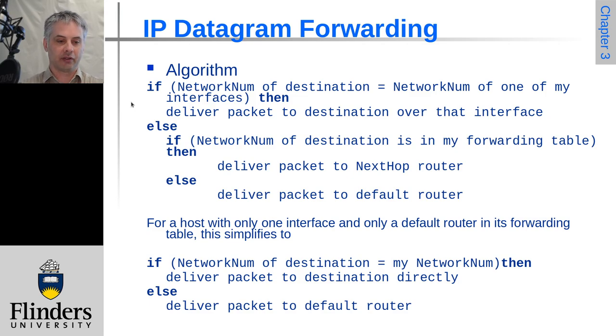So if we look at that bit of pseudo code, if the network number of the destination is a network number of one of the interfaces that's directly connected to a host, then deliver the packet directly to that destination.